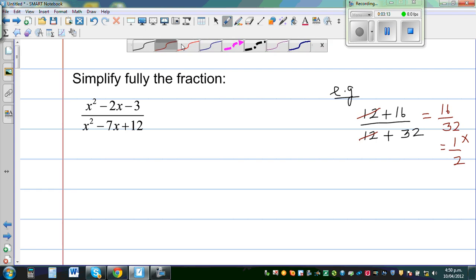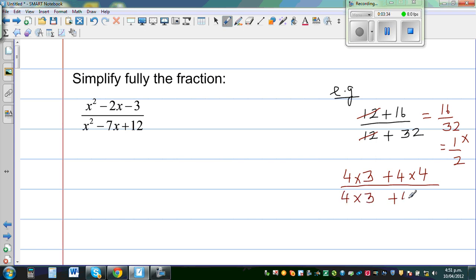But what you can do is factorize. So can I say this is 4 times 3 plus 4 times 4. This is called factorization of numbers. The denominator you can write as 4 times 3 plus 4 times 8.